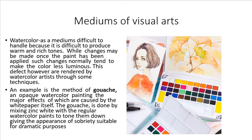An example is the method of gouache — an opaque watercolor painting, the major effects of which are caused by the white paper itself. Gouache is done by mixing zinc white with a regular watercolor paint to tone them down, giving the appearance of sobriety suitable for dramatic purposes.